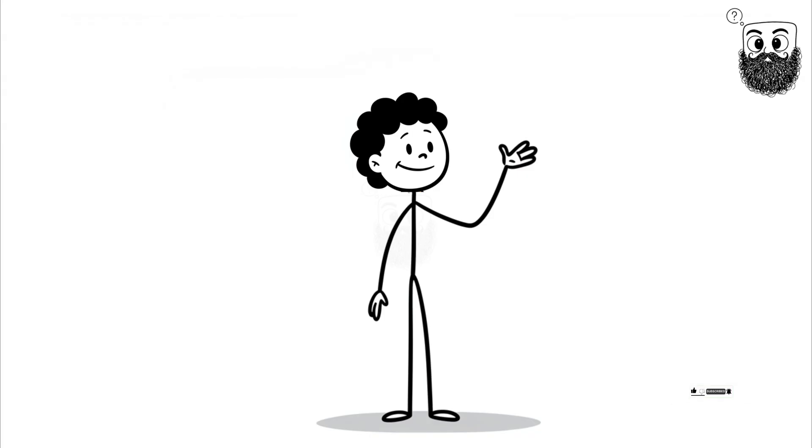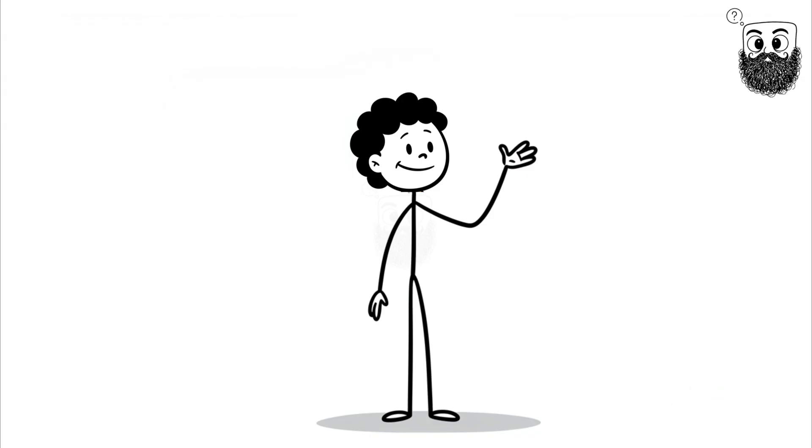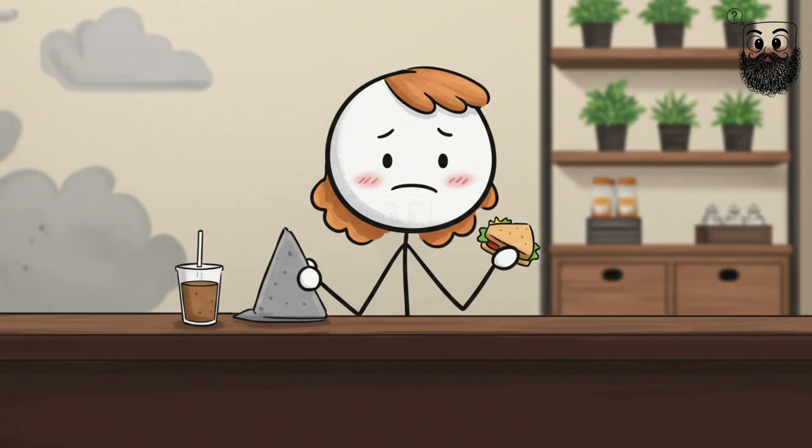Some people with synesthesia can taste shapes, like taking a bite of your sandwich and tasting a triangle. Others see specific colors when they look at numbers or letters.